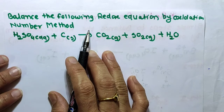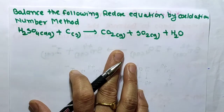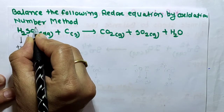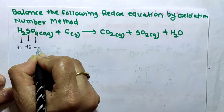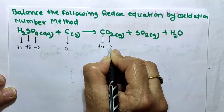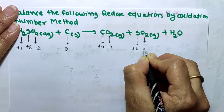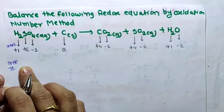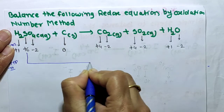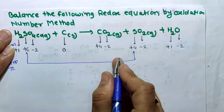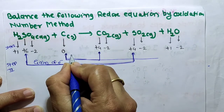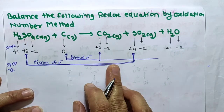Now let's balance the next redox reaction: H₂SO₄ + C, by oxidation number method. In step one, assign oxidation numbers. In step two, identify the atoms undergoing change: sulfur changes from +6 to +4 — decrease in oxidation number, meaning gain of electrons, which is reduction. Carbon changes from 0 to +4 — increase in oxidation number, meaning loss of electrons, which is oxidation.